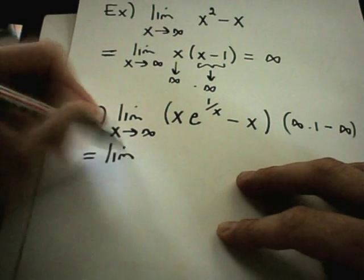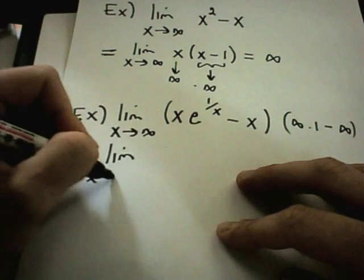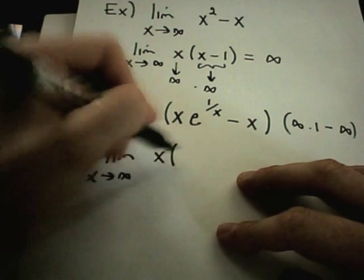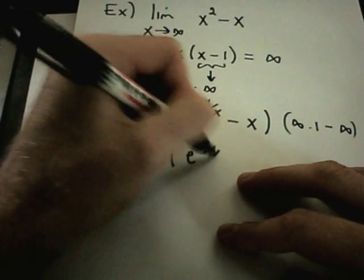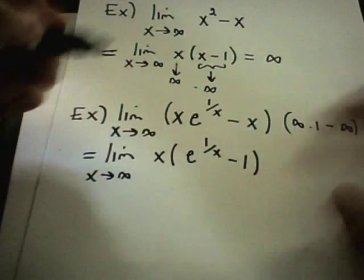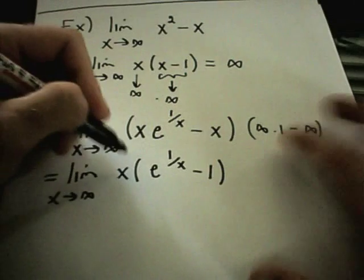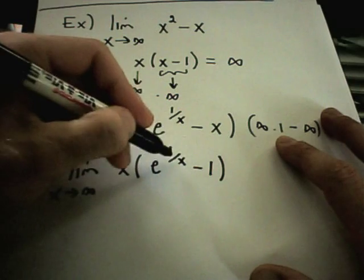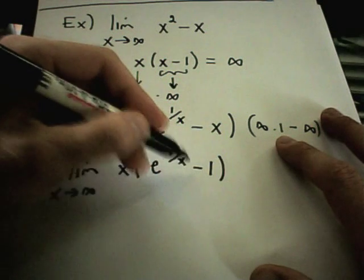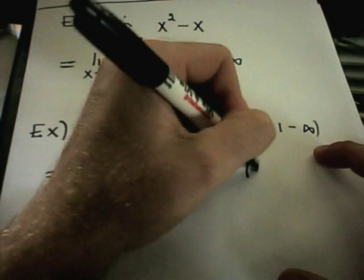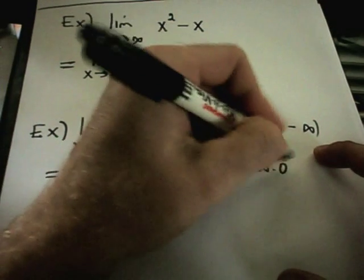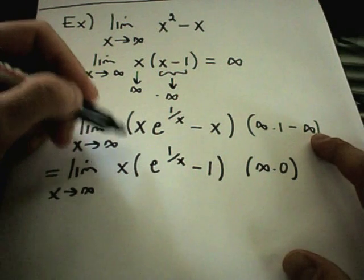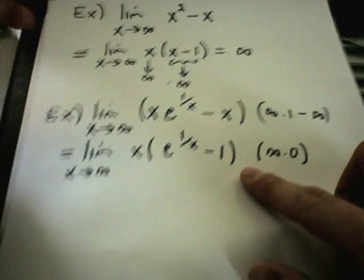Just like in the last problem, to get started I'm going to factor out an x. Now I have e to the 1 over x minus 1. Notice again, as x goes to infinity, I'm going to have e to the 0, or 1 minus 1 in the parentheses — infinity times 0. So now I've turned it from one of these indeterminate differences into an indeterminate product.